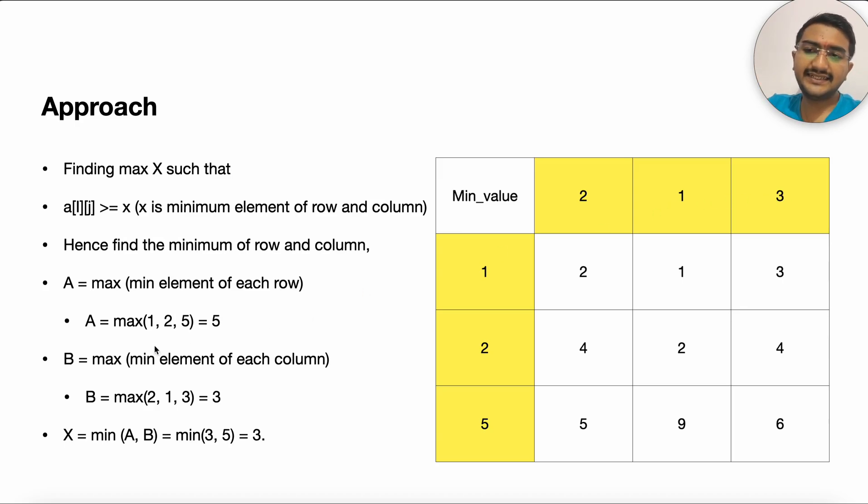And then let's say a is the first variable that we want to find where we have the maximum value of the minimum element of each row. So in this case it is maximum of 1, 2, 5, so it is 5 or the third row.